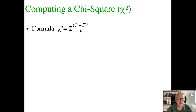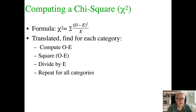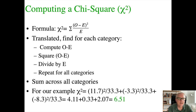The formula for chi-square is the sum of (O minus E) squared, divided by E, for each observation. So I compute O minus E, square each O minus E, divide by E, and sum across all categories. For our example, that's 11.7 squared divided by 33.3, plus (−3.3) squared divided by 33.3, plus (−8.3) squared divided by 33.3. That gives me 4.11 plus 0.33 plus 2.07, and finally a chi-square value of 6.51.